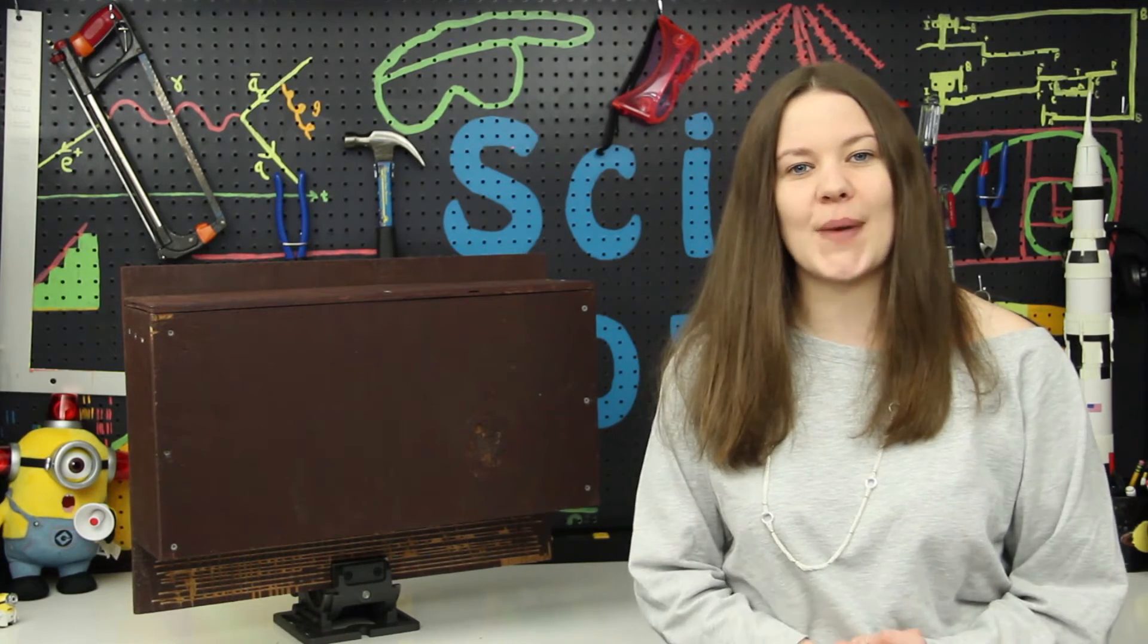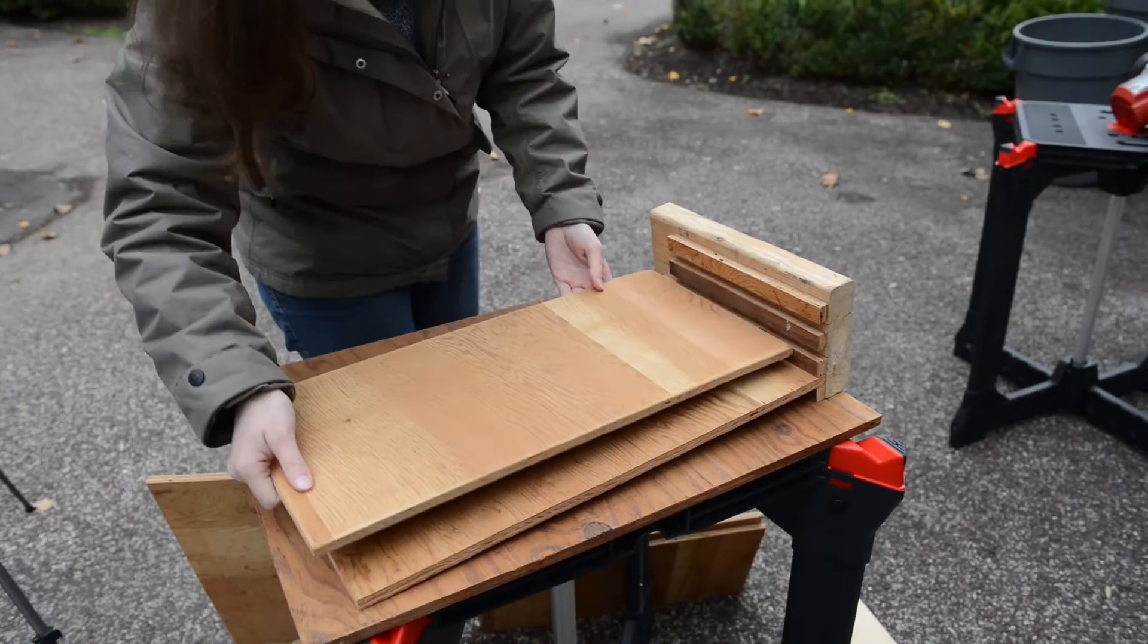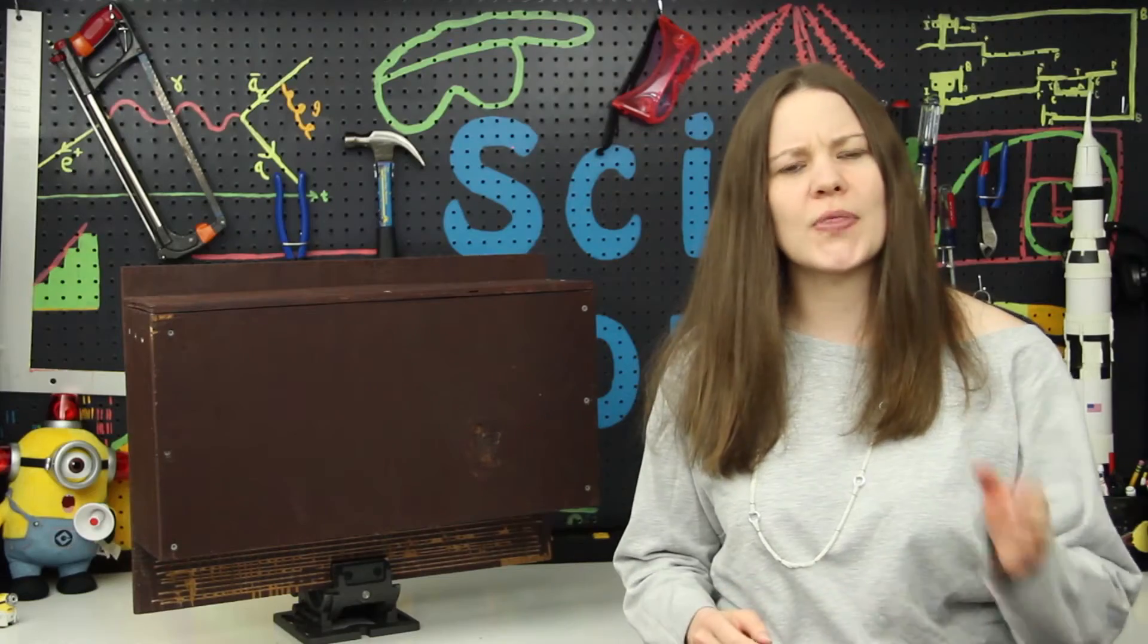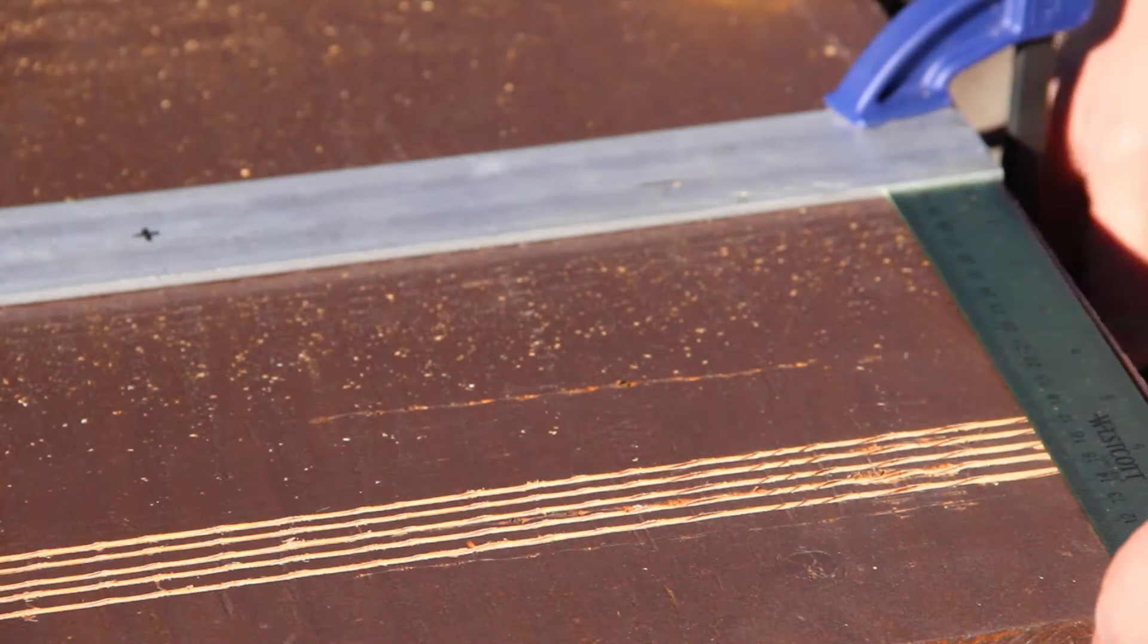Bat Conservation International has done a lot of research to figure out what kind of houses bats like best, and they say any house that has three or more baffles is more likely to be inhabited. You're going to want the backboard and each of the baffles to be scored on one side.